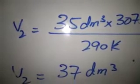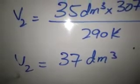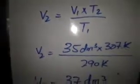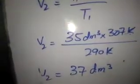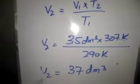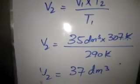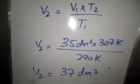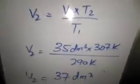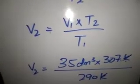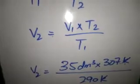The result will be 37 decimeter cube. Now the last numerical, number 10. The largest moon of Saturn is Titan. It has atmospheric pressure of 1.6 multiply by 10 to the 5 Pascal.